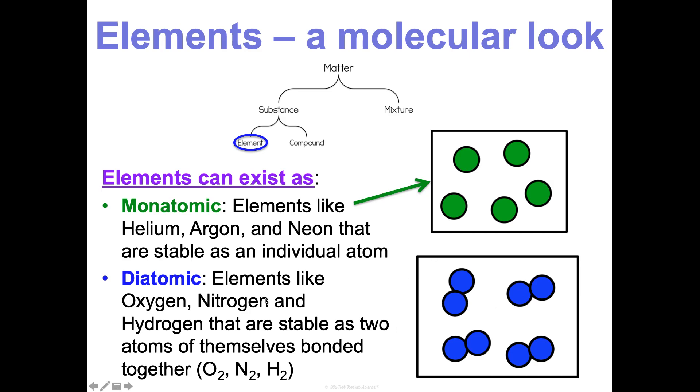Whereas diatomic elements are elements like oxygen, nitrogen, hydrogen that are actually more stable when two atoms of themselves are bonded together. So oxygen, when you're breathing in oxygen in the air around you, you're not just breathing in a bunch of atoms of O. You're breathing in O2, two atoms of oxygen that are chemically combined together as O2. But we still would refer to this just as an element of oxygen. Or N2 is atmospheric nitrogen. That's the nitrogen that exists in the atmosphere around you is N2. It's two nitrogens chemically combined together. And we'll talk more about bonding in our bonding unit.